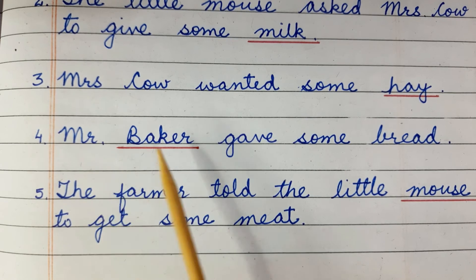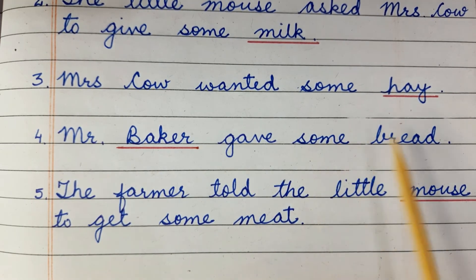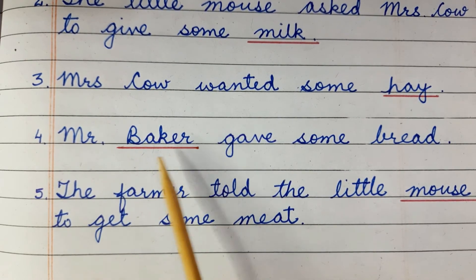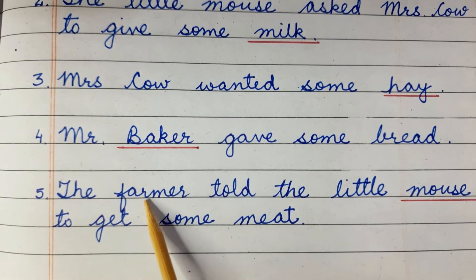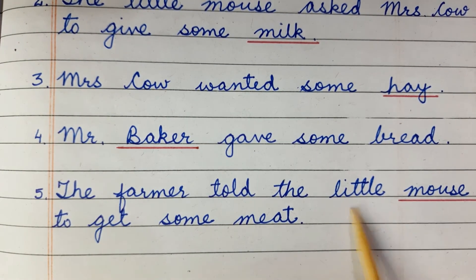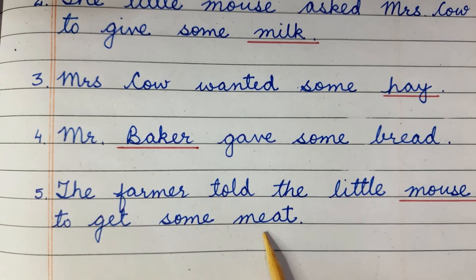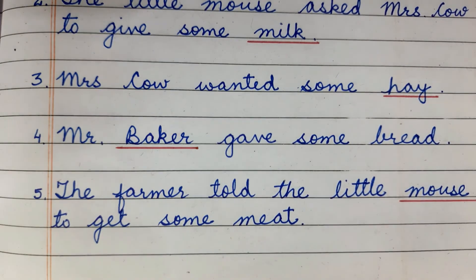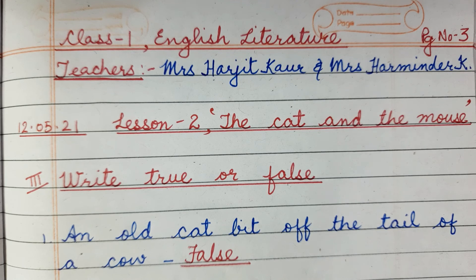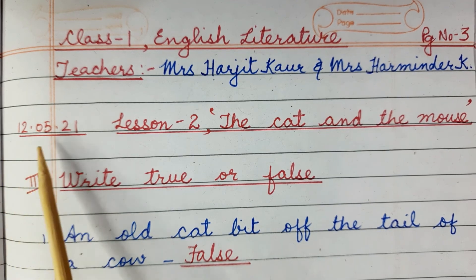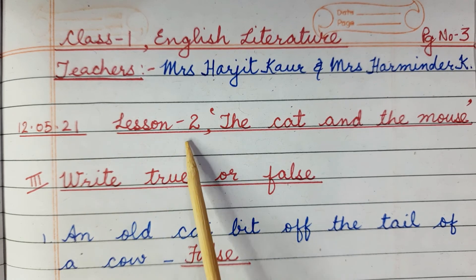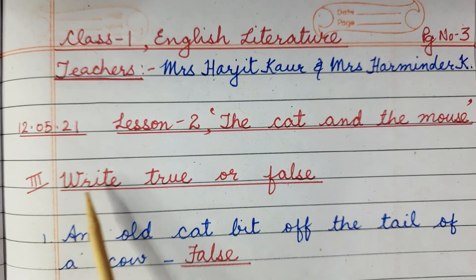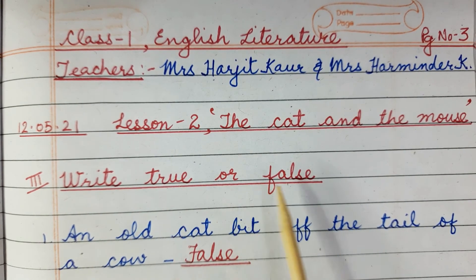Fourth: Mr. blank gave some bread. Answer: baker, B-A-K-E-R. The farmer told the little blank to get some meat. Answer: mouse, M-O-U-S-E. Alright, children. Now next, put the date: 12-5-21. Lesson number 2, The Cat and the Mouse. Third exercise: Write true or false.